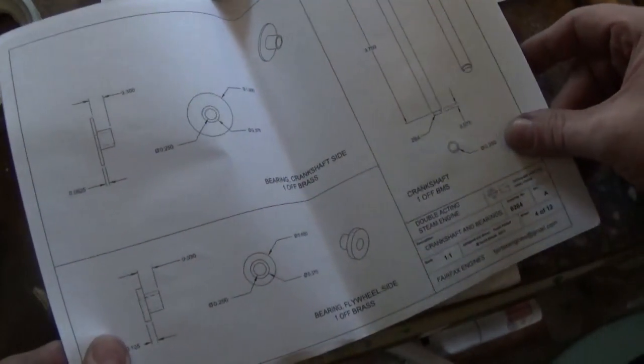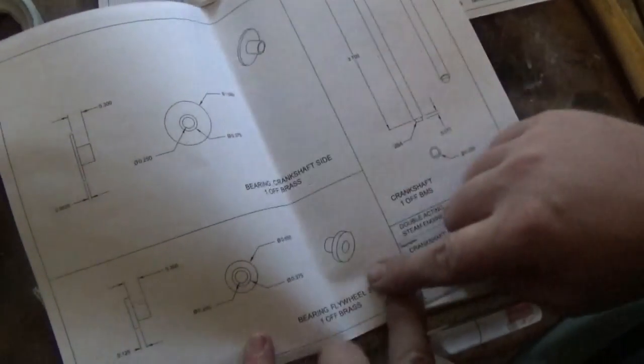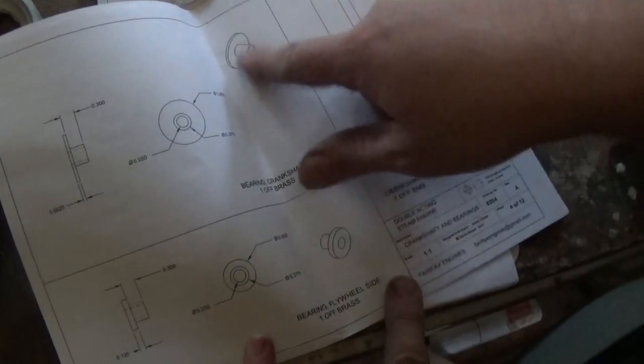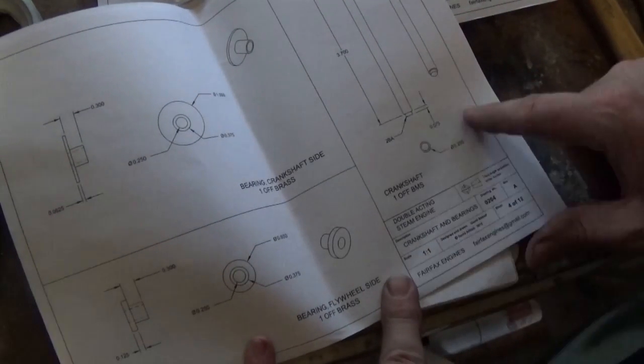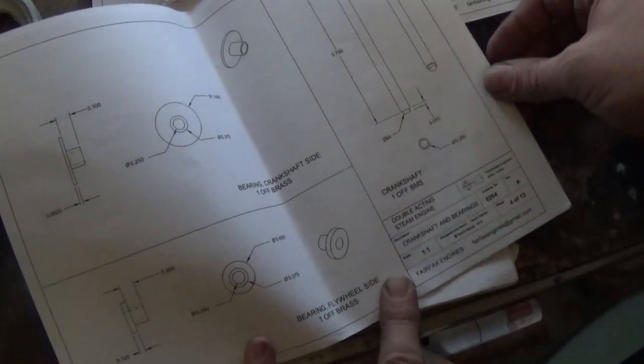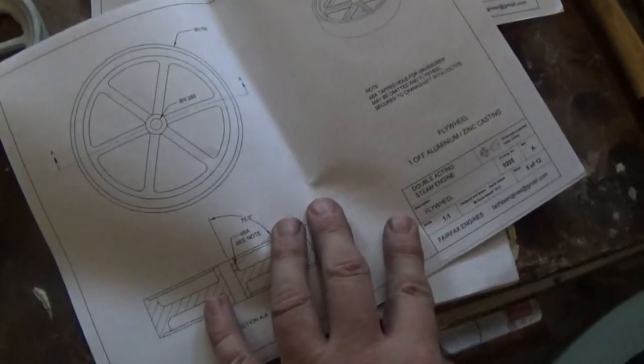Pretty nice and neat and easy to read. You've got two bearings which are basically just bushes, a crankshaft which is quarter inch diameter, a flywheel.